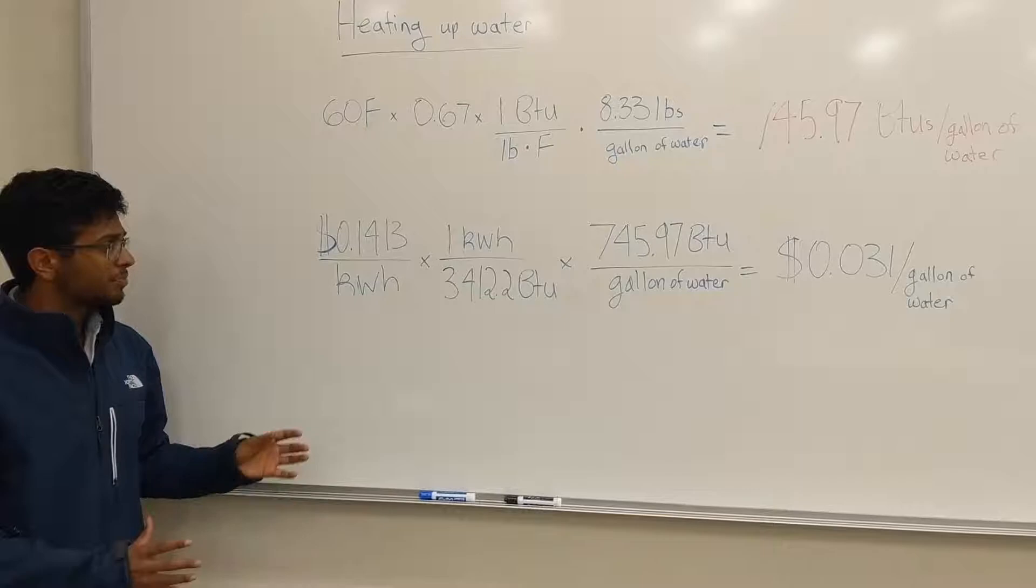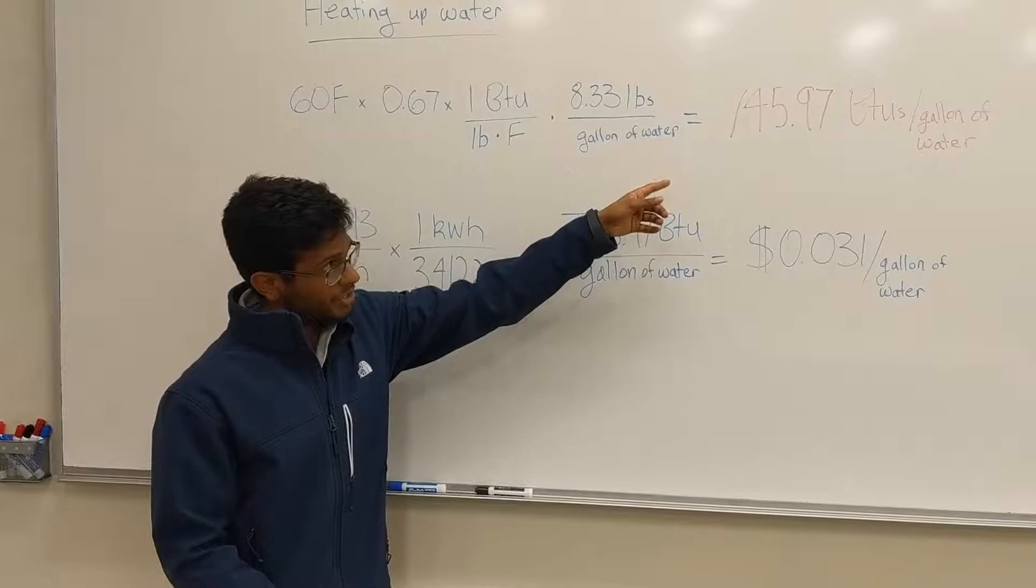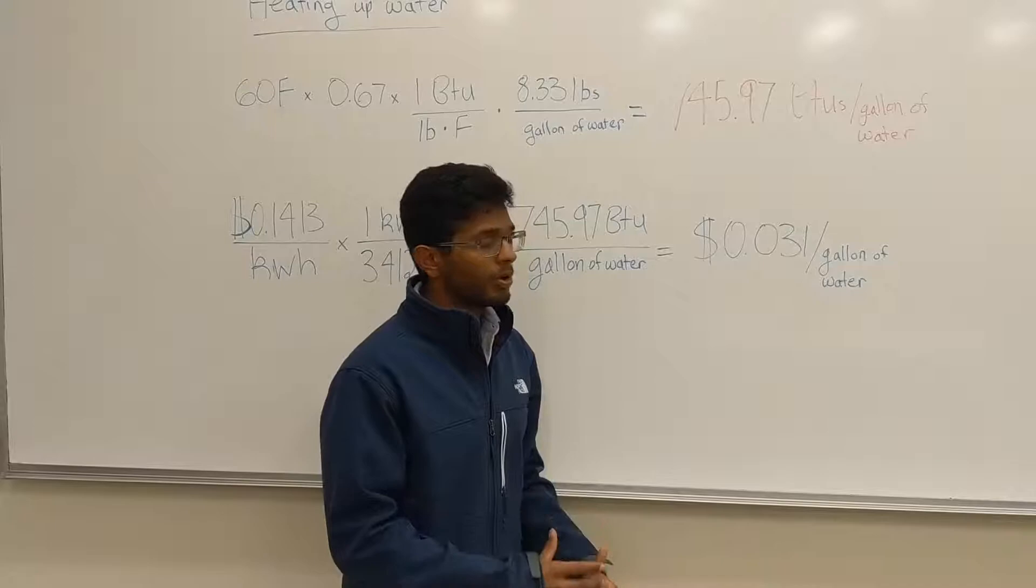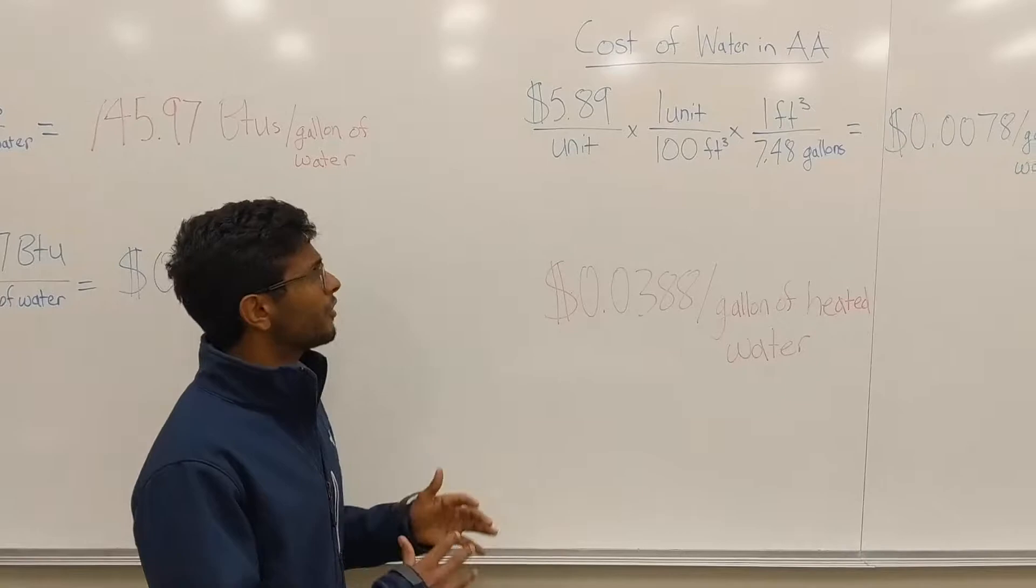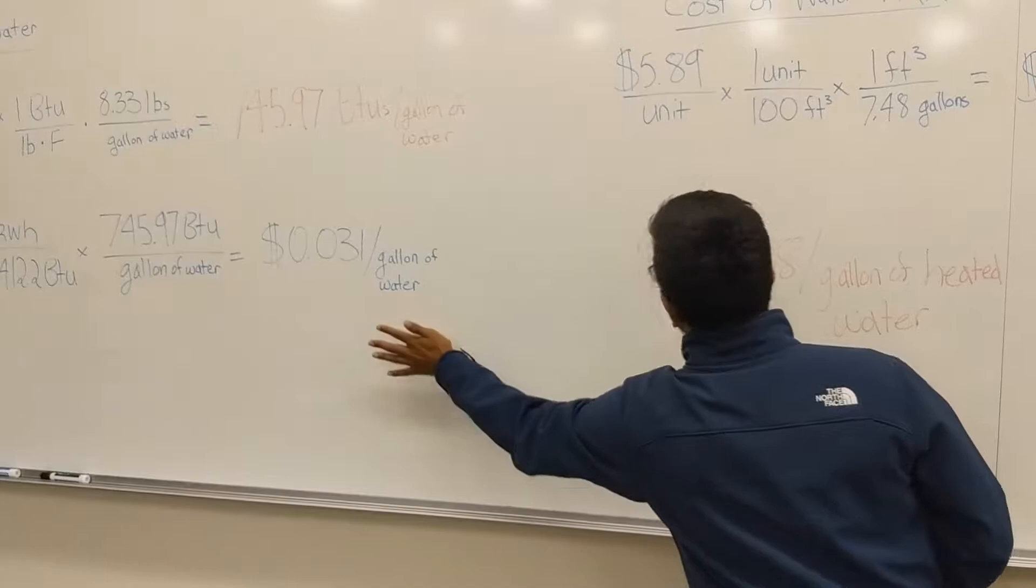In Ann Arbor, DTE charges roughly 14 cents per kilowatt hour. And doing a conversion, and using the amount of energy to heat up 1 gallon of water, we calculated that it takes around 3 cents to heat up 1 gallon of water. In Ann Arbor, the cost of water is right under $6 per unit. And doing another conversion, 1 gallon of water costs 0.8 cents. Now combining this cost here and this cost here, it will cost 4 cents for 1 gallon of heated water.